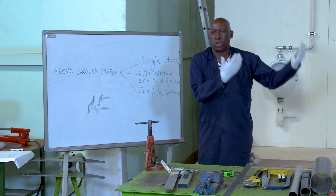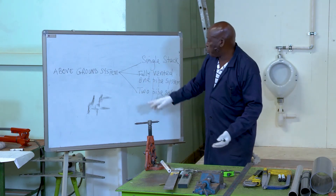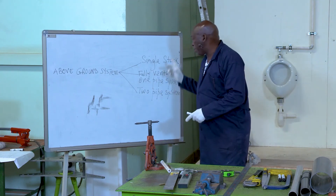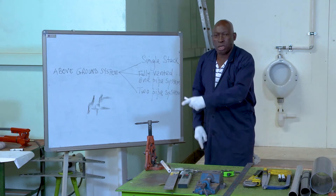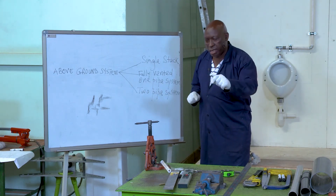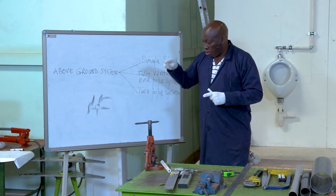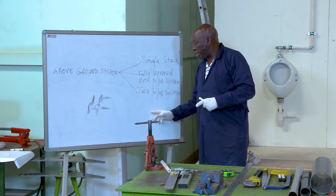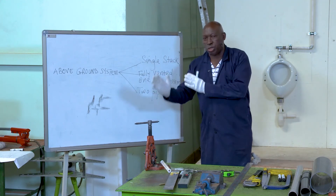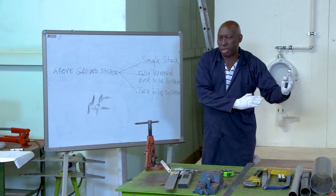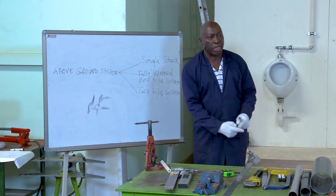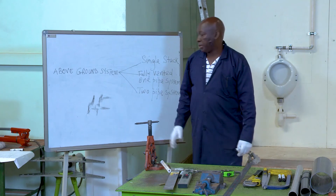The soil stack and waste stack take waste down to below ground separately. The soil stack goes directly to the septic tank, while the waste stack goes directly to the soakaway pit. The two wastes never meet because each appliance drains to its relative stack — soil appliances to the soil stack, waste appliances to the waste stack — and then they go separately underground, one to the septic tank and the other to the soakaway pit.